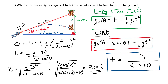Seven meters per second is the minimum speed required. If you shoot at five meters per second, the bullet won't travel the full four meters and won't reach the monkey. For any speed greater than seven m/s you'll hit the monkey somewhere above the ground. In the limit of very high velocity, the bullet essentially follows the line of sight and hits the monkey almost immediately — there is a whole range of valid speeds. This is such a nice problem.